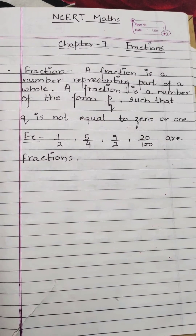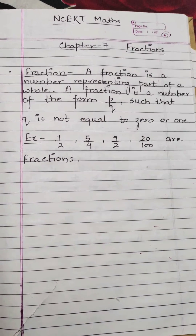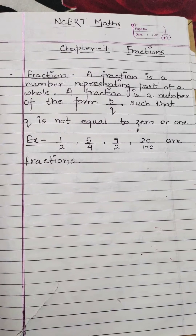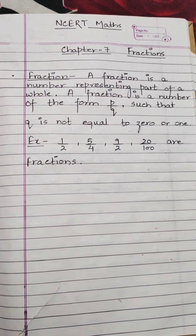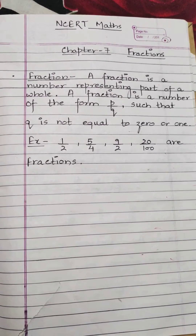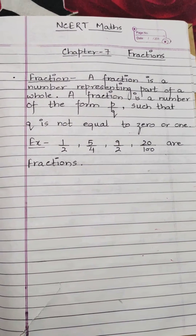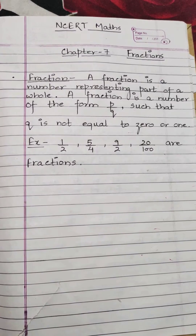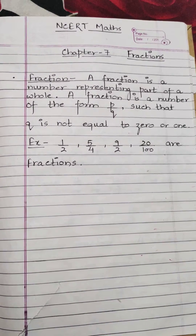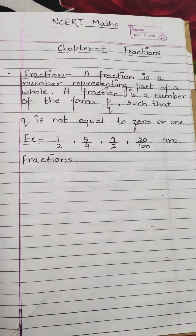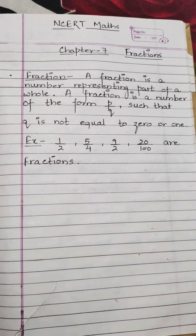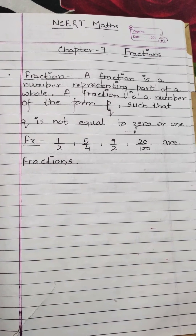A fraction is a number of the form p upon q, such that q is not equal to 0. Some examples of fractions are also given. Before discussing the examples, we will look at the definition again: a fraction is a number representing part of a whole.